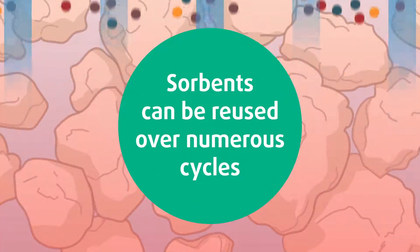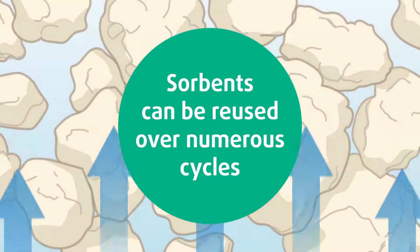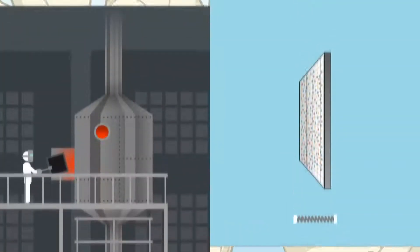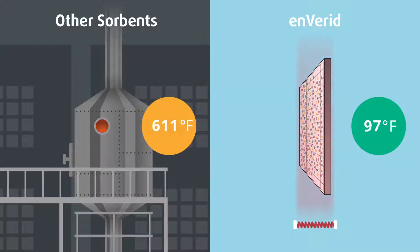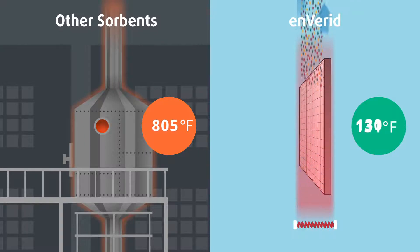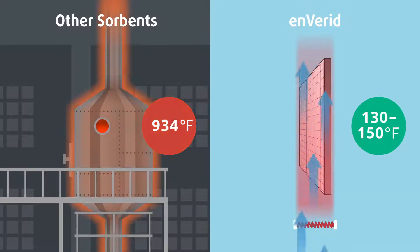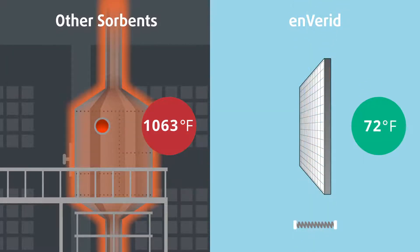While most sorbents take extreme temperatures to regenerate, often more than 1,000 degrees Fahrenheit, Inverid sorbents regenerate at a remarkably low 130 to 150 degrees Fahrenheit, enabling regeneration to occur on-site quickly and cost-effectively.